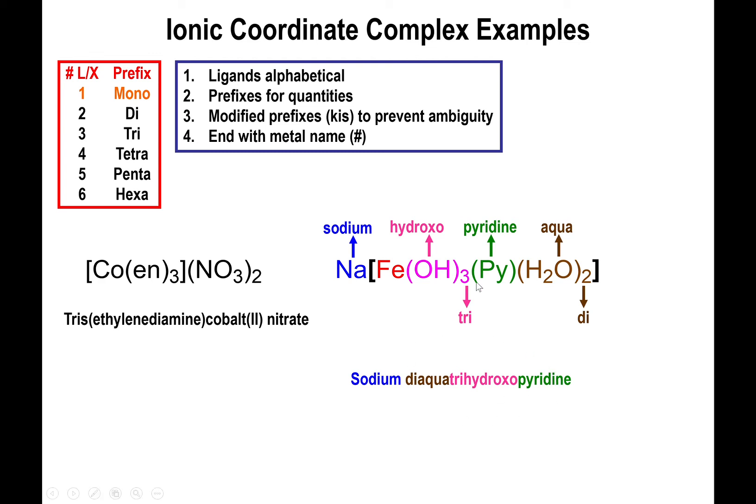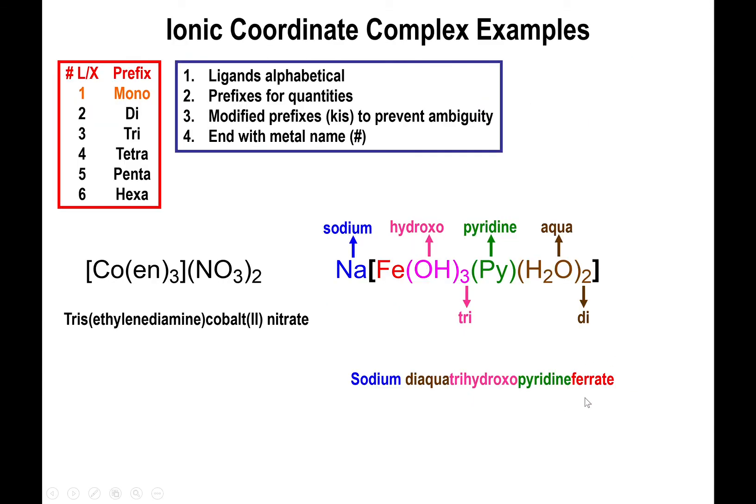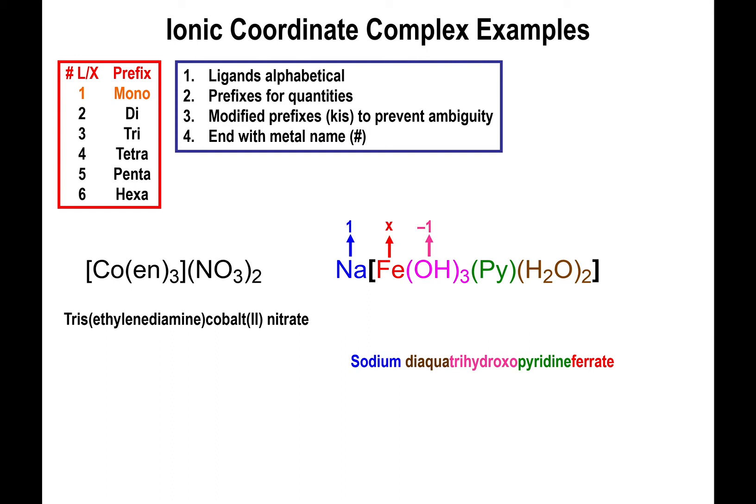And you end the name of the anion by naming the metal. But this is an anionic segment, so this cannot be named iron, it actually has to be known as ferrate. So we name it ferrate instead of iron because this is the anionic portion of the salt. And now we figure out the charge. Sodium has a +1 charge. Iron, we're about to find out. Hydroxyl has a 1- charge. Pyridine and water are both neutral. So overall we have one sodium, we have three hydroxyls with a 3- charge, so we have +1 - 3 + x = 0, and that means x - 2 = 0, or that iron itself has a charge of +2. So we end the name by calling this ferrate(II). So altogether the name of the structure is sodium diaquatrihydroxylpyridineferrate(II).